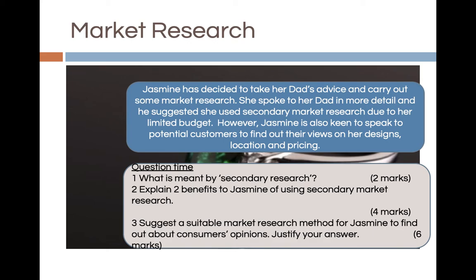Moving on — Jasmine has decided to take her dad's advice and carry out market research. He suggested she use secondary market research due to her limited budget. However, Jasmine is also keen to speak to potential customers to find out their views on her designs, location, and pricing. The questions are: what is meant by secondary research? Explain two benefits to Jasmine of using secondary market research. And suggest a suitable market research method for Jasmine to find out about consumer opinions, and justify your answer. Stop the video here, jot down notes, and we'll come back and discuss.